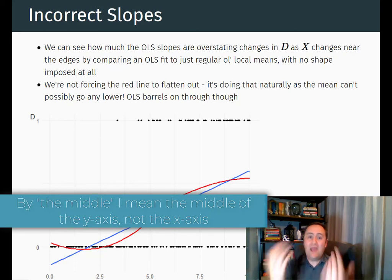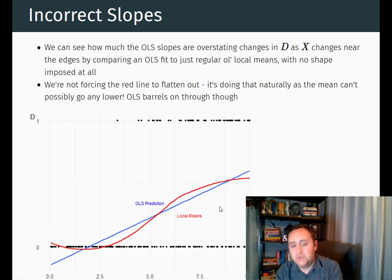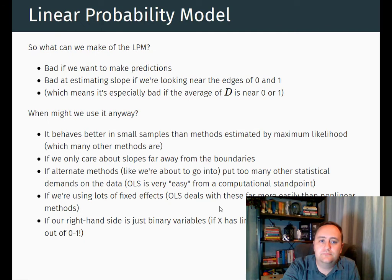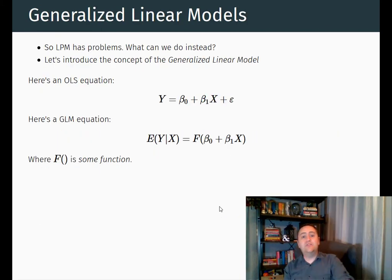So we have linear probability models. They have problems. What can we do instead? Instead, we're going to use something called a generalized linear model.